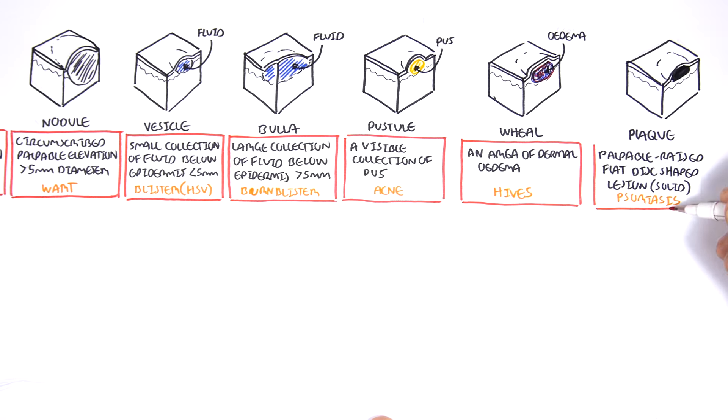A pustule is pus. A pustule is a visible collection of pus. A pustule can be acne, for example.